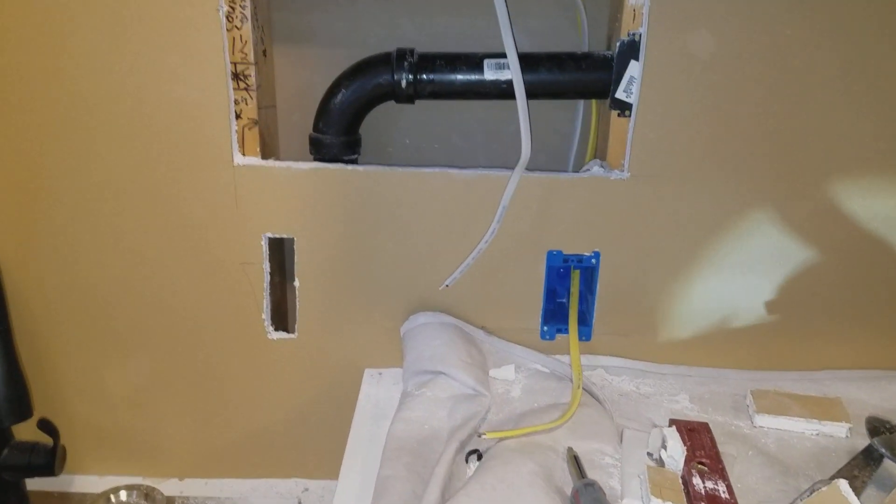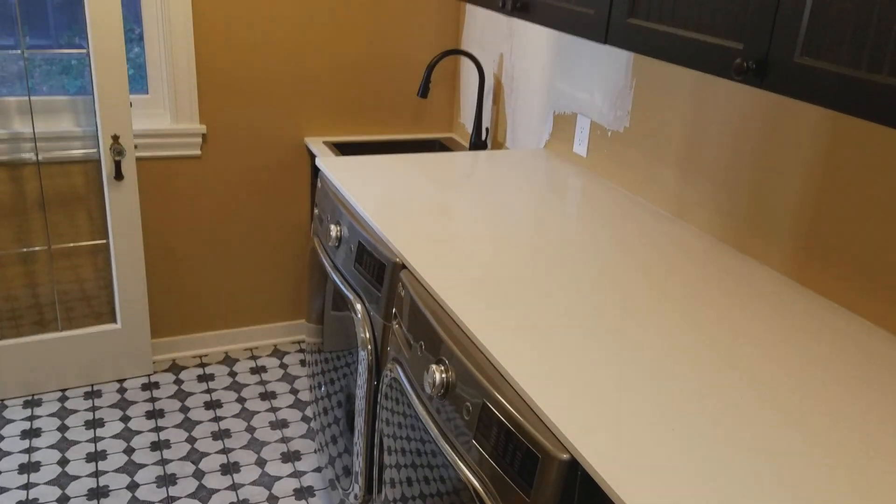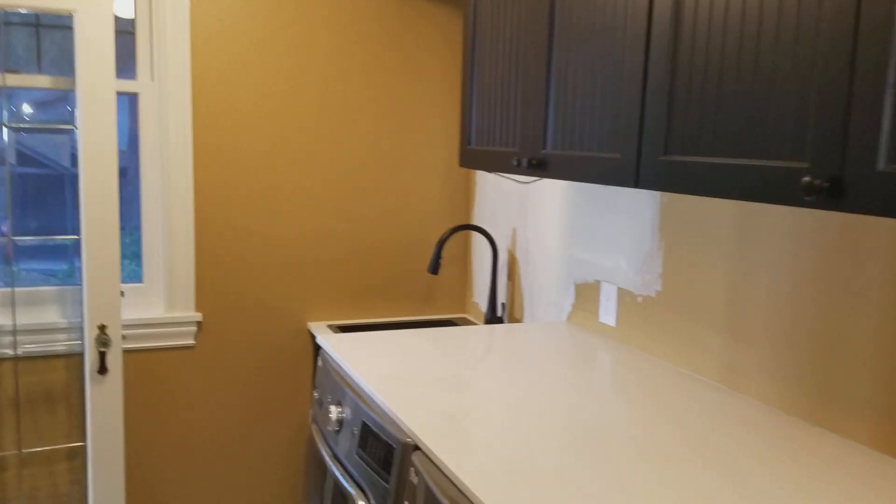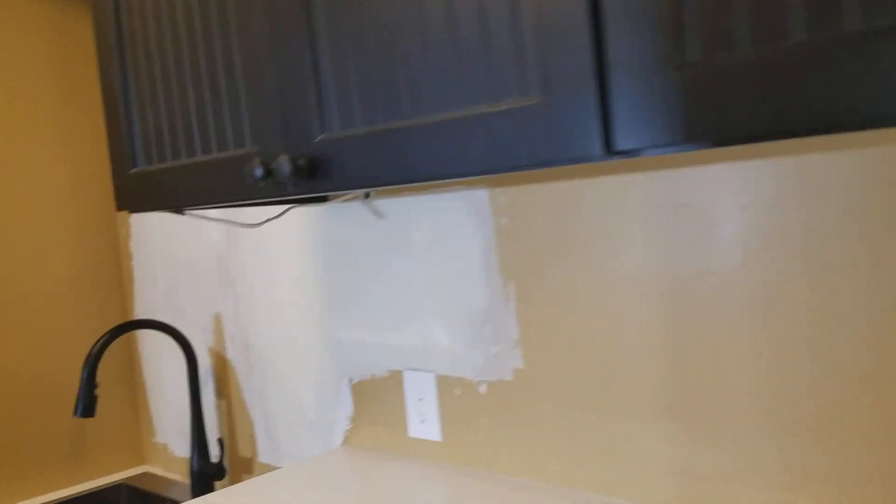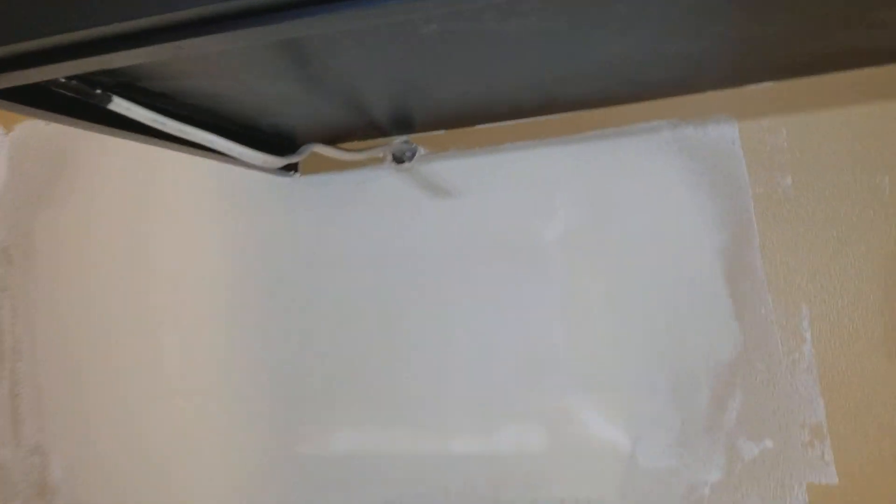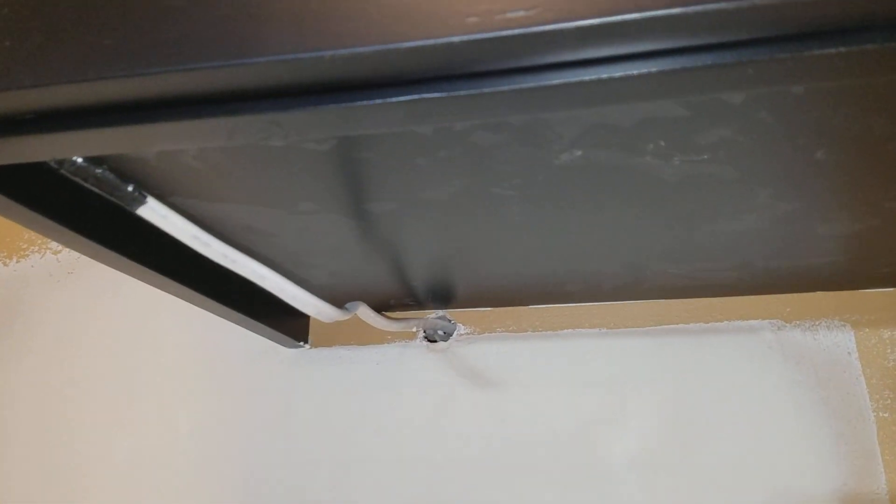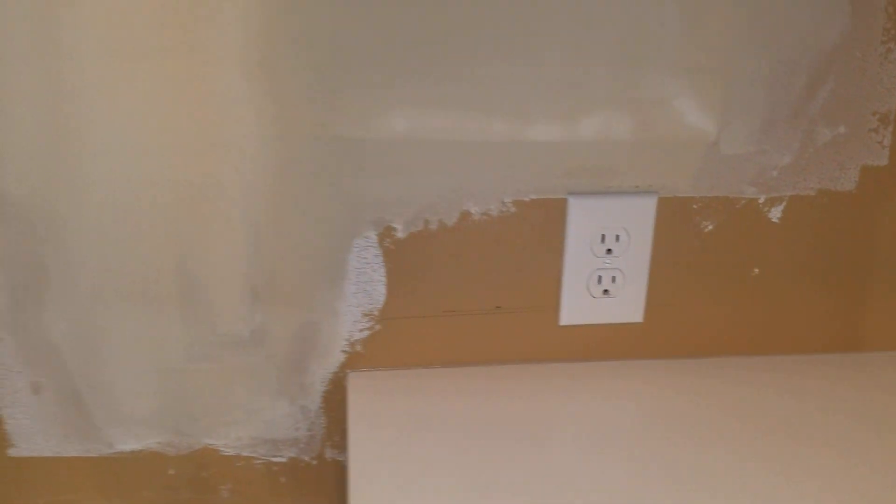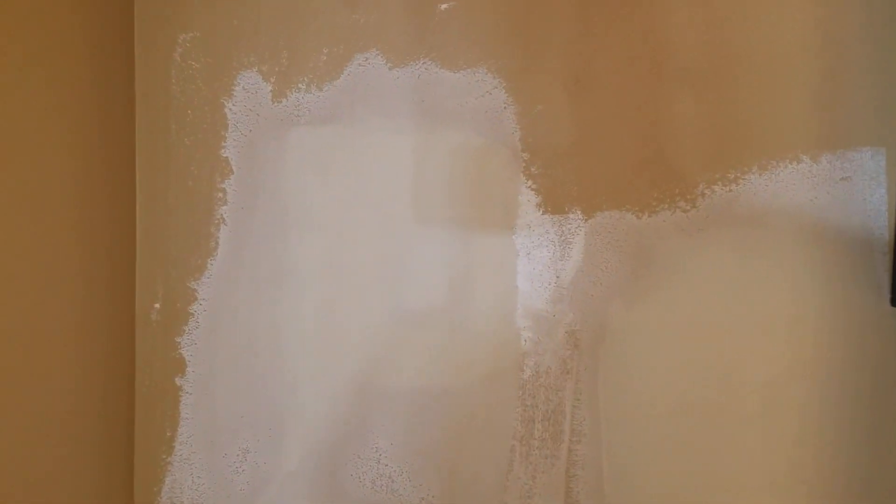Okay, quick and easy. We have finished making the changes here. There is the wire for the counterlights. There is the relocated outlet that came from there. You can make out the patch for it there.